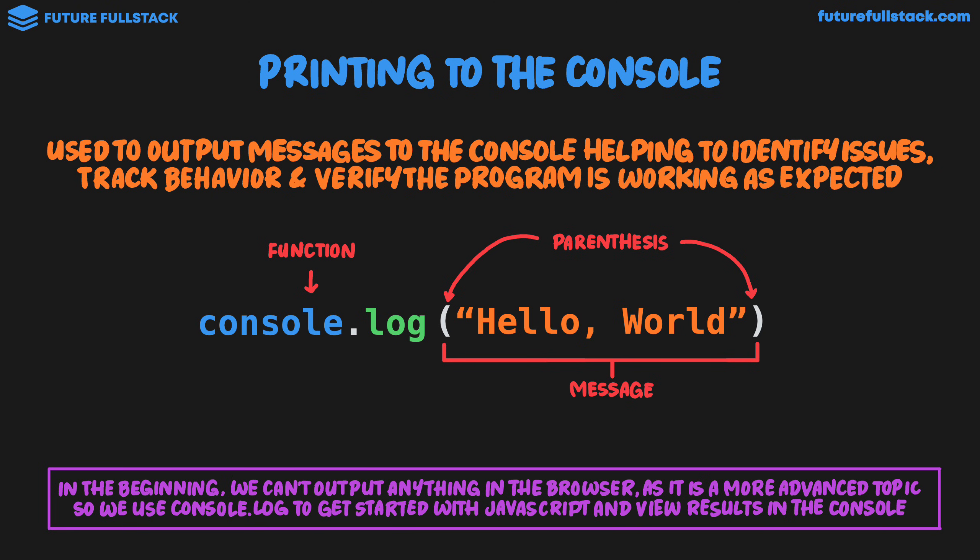When you become a professional JavaScript developer, you mainly use console.log to output messages to identify issues, track behavior, and verify programs are working correctly. However, at the start of your JavaScript journey, we're not going to be able to modify web page content using JavaScript — it's a more advanced topic we're going to cover later. So to get started, we're going to be outputting the results of our code to the console using console.log. I wanted to highlight this because when I was taught JavaScript, it wasn't clear to me what console.log is even doing — why am I outputting results to this funny place in the browser instead of on the web page? We're going to use console.log a lot at the start of the course, but as we build up our skill base, we're going to output results to the actual web page and use console.log for its intended purpose: outputting messages to identify issues in our code.